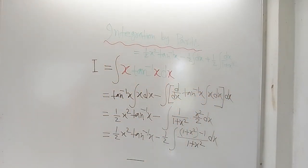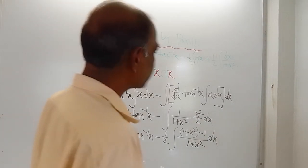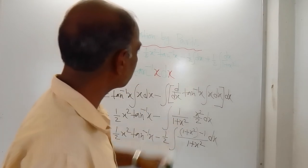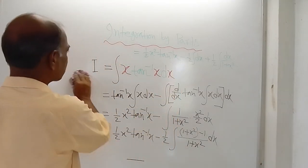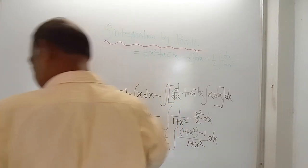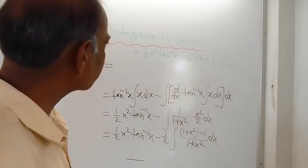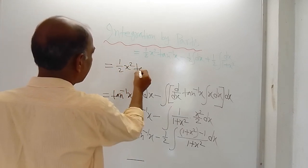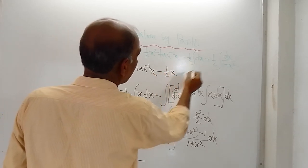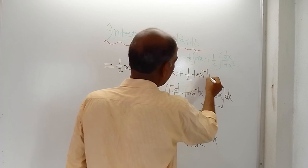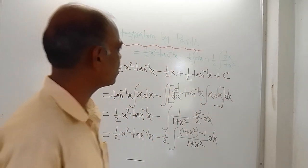This color is visible or not? That color is actually not clearly visible, but I think it is legible. I am using black color again to write the next line. So it is half x squared tan inverse x, minus half of x, and here plus half of — integration of dx by 1 plus x squared — that is tan inverse x. And of course there will be a constant of integration c.